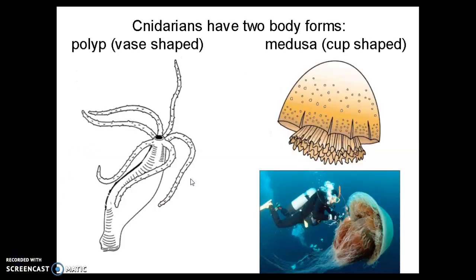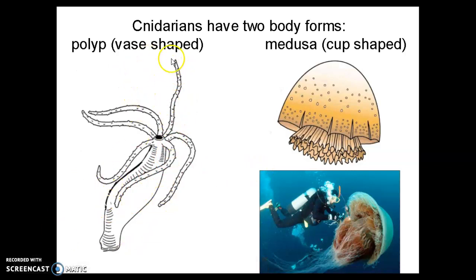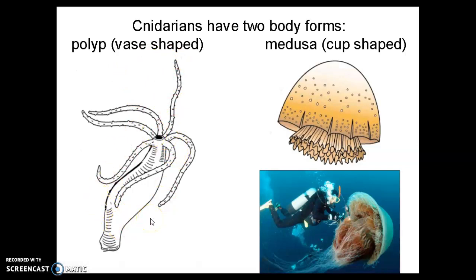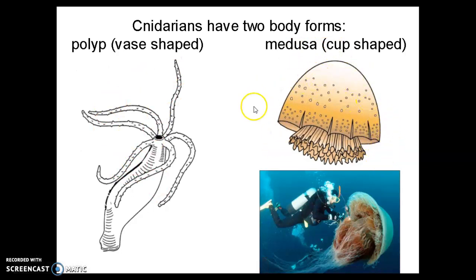Cnidarians have two main body forms. Most are the polyp shape — like a hydra, which has a vase shape. Things like anemones, corals, and hydras all have a polyp shape. Jellyfish have a cup-shaped or medusa form when they are adults. When they are first developing, they are polyps, but as adults they form this bell- or cup-shaped medusa.